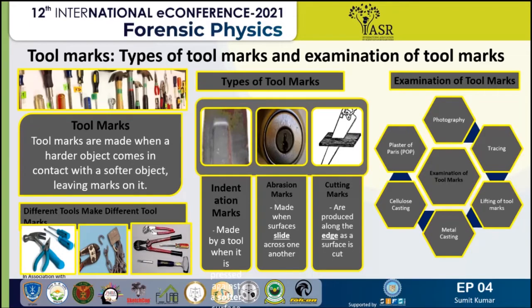Second, a photograph is taken perpendicular to the tool marks. This provides a permanent record of the class and some individual characteristics of the tool marks. Third, if the surface onto which the tool mark is located cannot be collected as evidence, a cast of the tool mark is made. This cast is usually made with polymeric dental paste, plaster of Paris, and cellulose acetate.